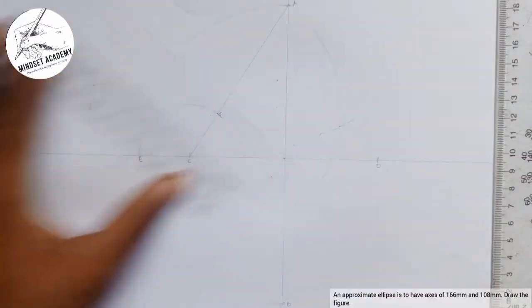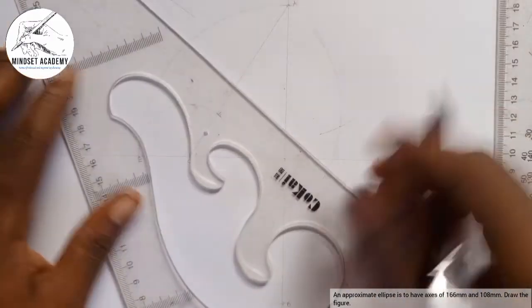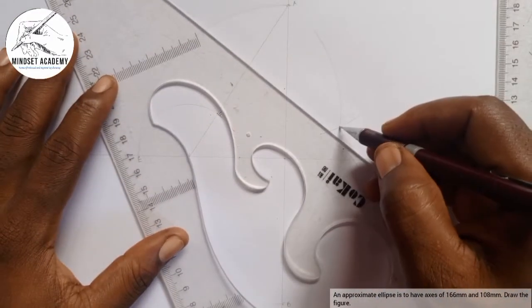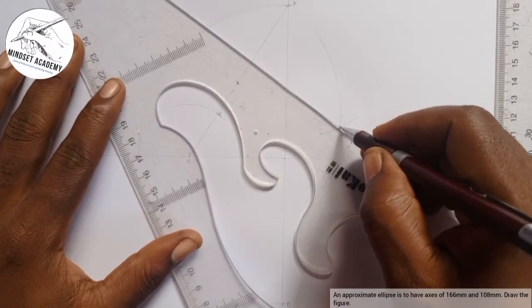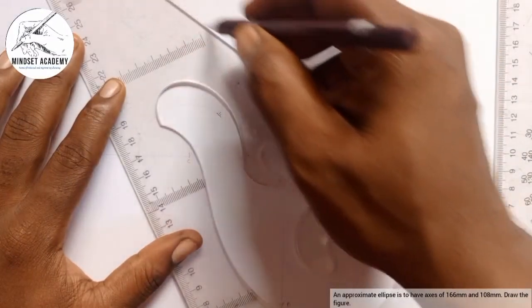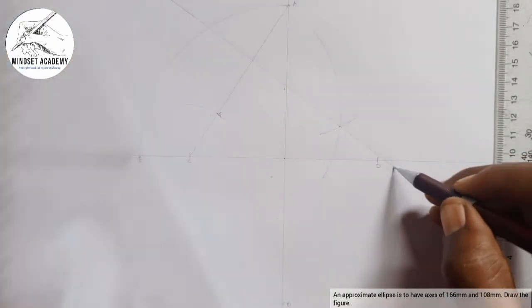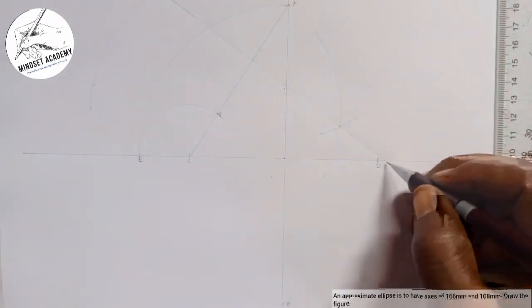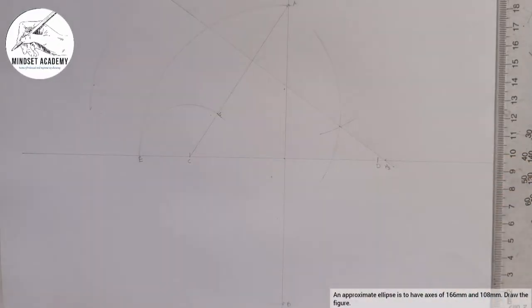I will use a bigger rule to use it this way, from this point to the other point where it intersects. Draw your line that will cut the horizontal axis here. So where it cuts the horizontal axis here you're going to call it H2.